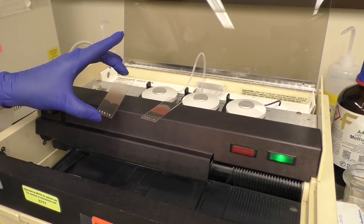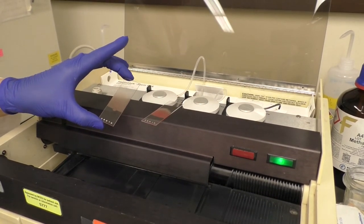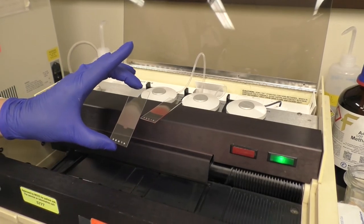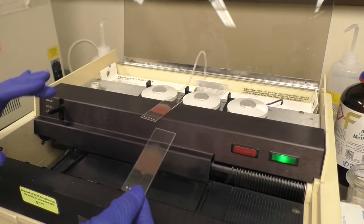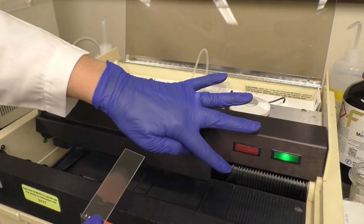First, place prepared slides for staining in the grooves of the conveyor spirals. Ensure the slide is properly aligned in two directly opposite grooves.